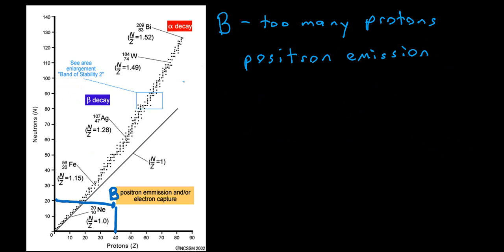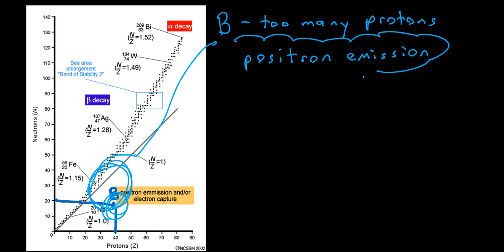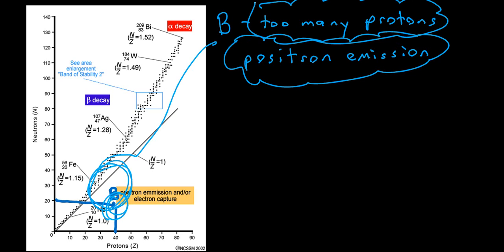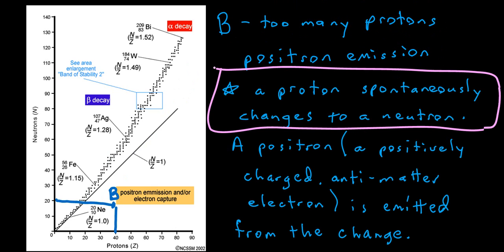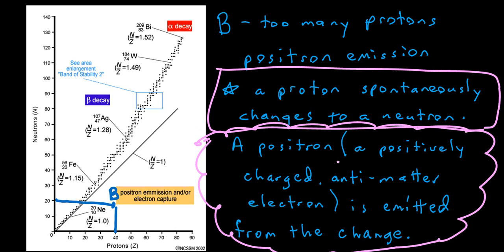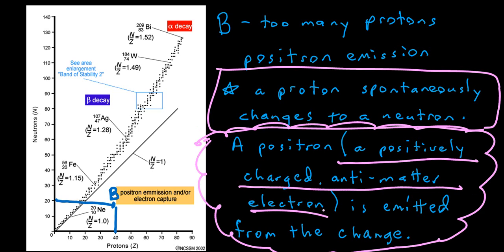Our next area is region B, down and to the right, a little below the band of stability. If a plot falls in region B, the type of radiation is known as positron emission, which addresses the issue of too many protons in the nucleus. In positron emission, a proton spontaneously changes into a neutron within the nucleus, lessening the proton count and increasing neutrons. When this change occurs, a positron — a positively charged antimatter electron — gets emitted from the nucleus.